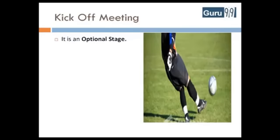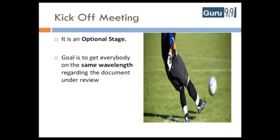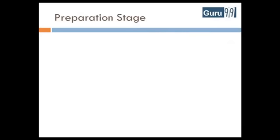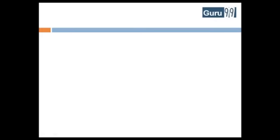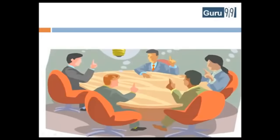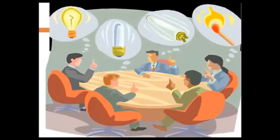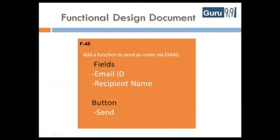The next stage is the kick-off meeting, which is optional. Here the goal is to get everybody on the same wavelength regarding the document under review — it is beneficial for new or highly complex projects. The next stage is the preparation stage, where review meeting participants individually go through the document to identify defects, comments, and questions to be asked during the review meeting. This phase is necessary to ensure that during the meeting, participants focus on the subject at hand.